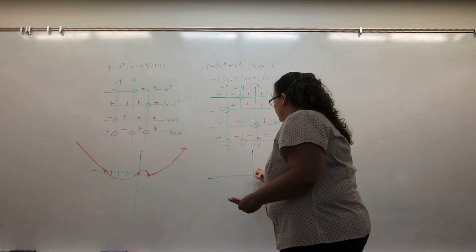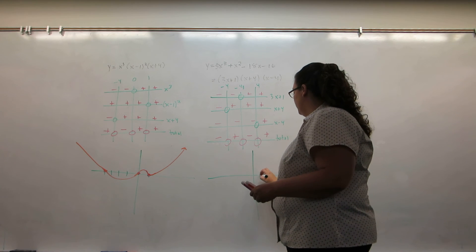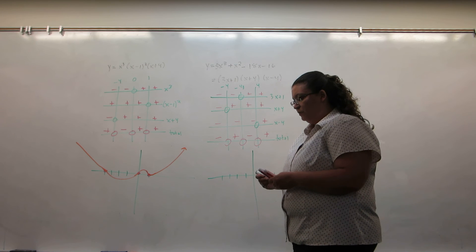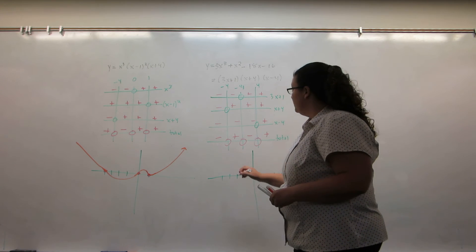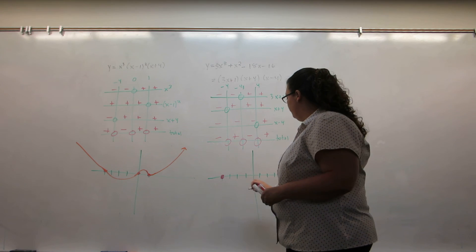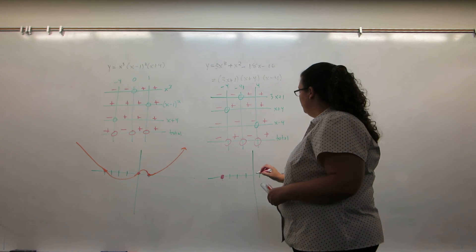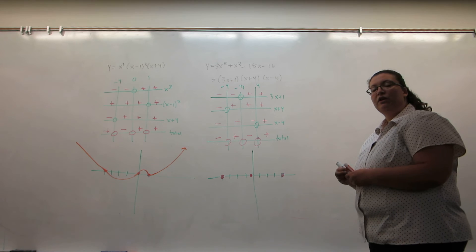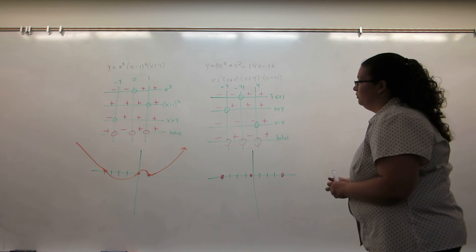So, when I graph it, first I want to graph my x-intercepts, which are everywhere the graph equals zero. So negative four, positive four, and minus a third. Okay, now I'm going to use the sign chart to fill in the rest of the graph.